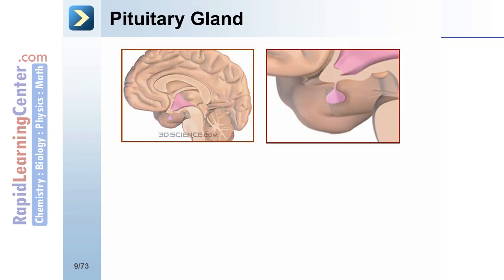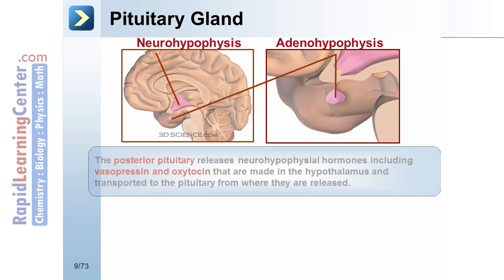The pituitary gland can be divided into the posterior and anterior segments, each of which carries out its own function. The posterior pituitary releases neurohypophysial hormones, including vasopressin and oxytocin, that are made in the hypothalamus and transported to the pituitary from where they are released.